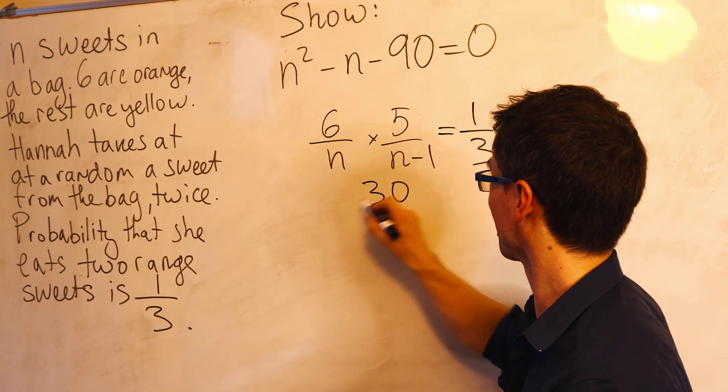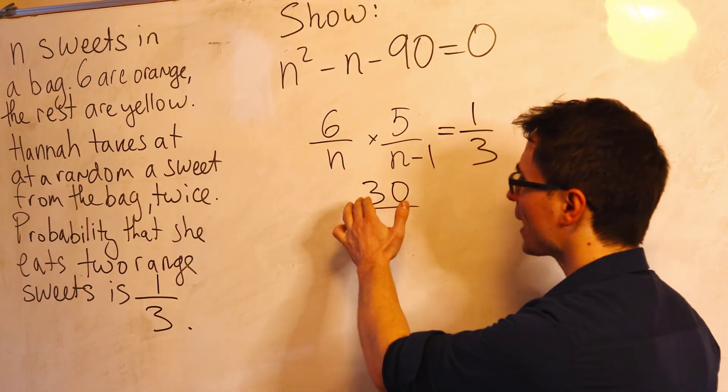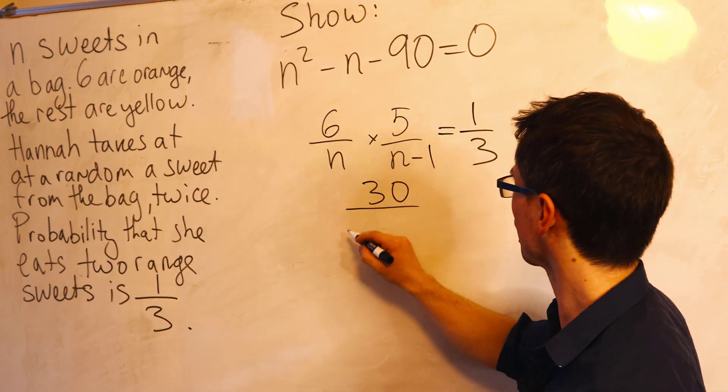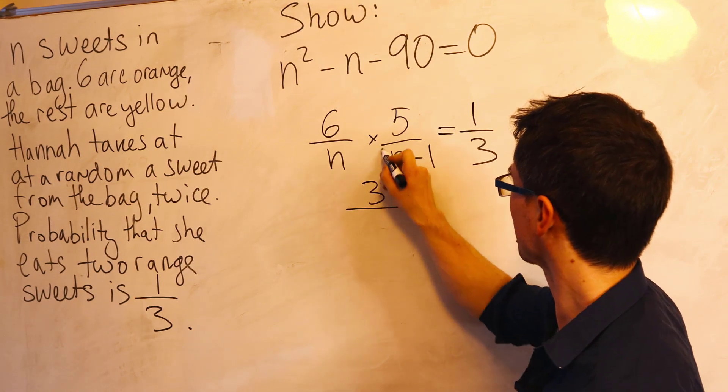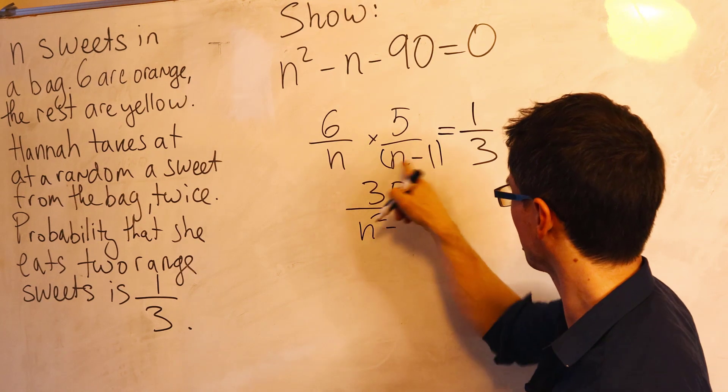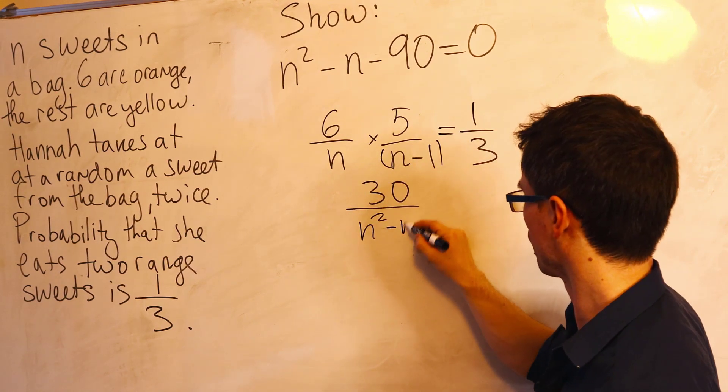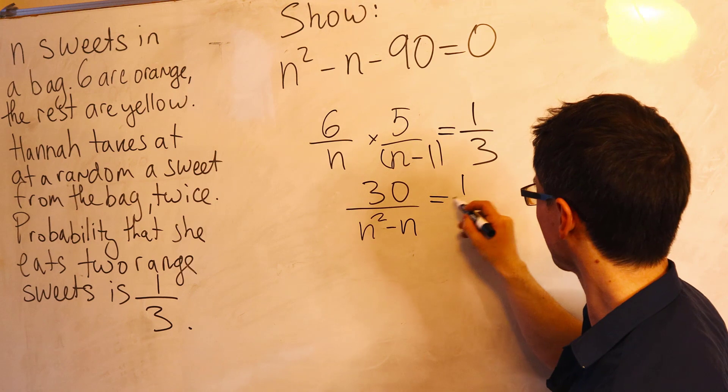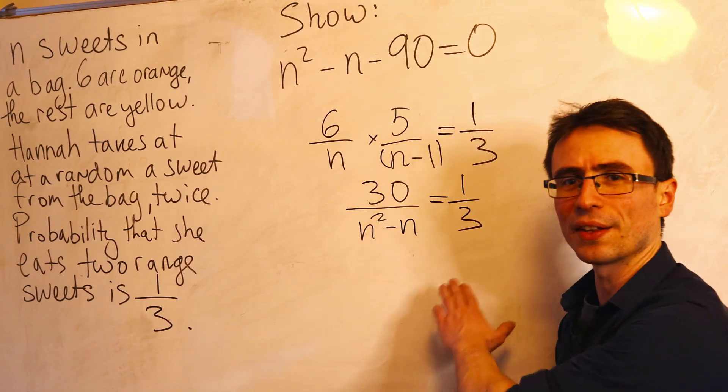So six times five, this is going to give me 30. Now in the denominator, I can just multiply those two numbers. So what I'm going to get is N times N take away one, which is going to give me N squared. Take away N times minus one is just minus N. And this here will be equal to a third.